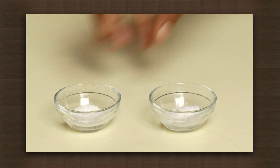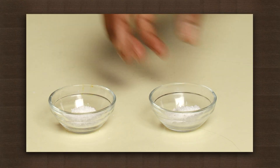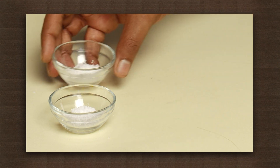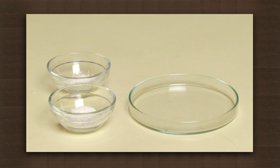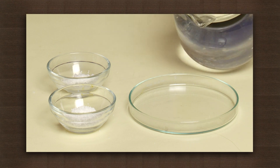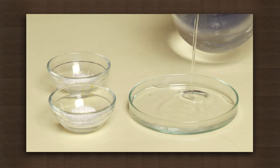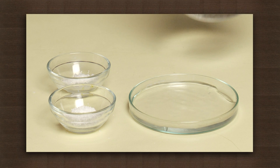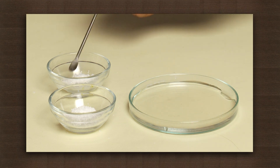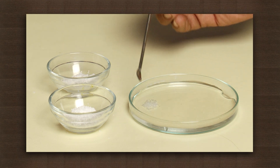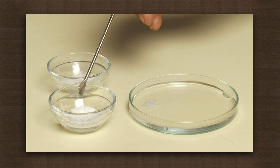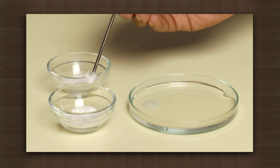Let us see an experiment to show that diffusion takes place in liquids. Here we have lead nitrate powder and potassium iodide powder. Take a Petri dish and pour some water in it. Now put some lead nitrate in one corner of the dish. Quickly put some potassium iodide on the opposite end in the dish.